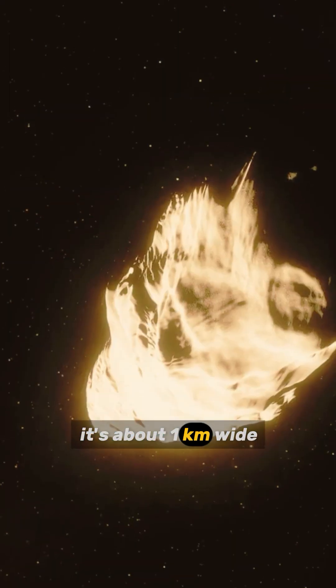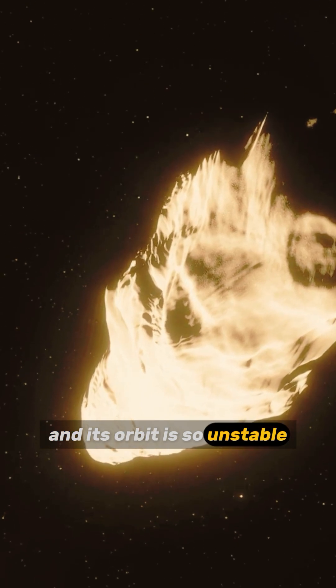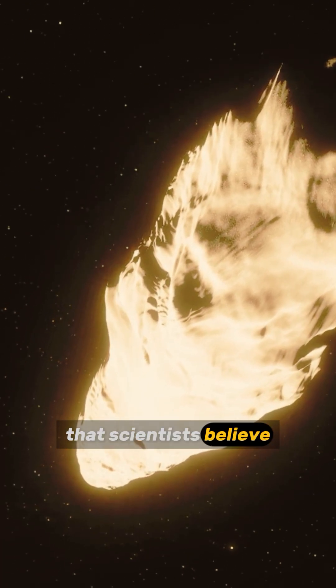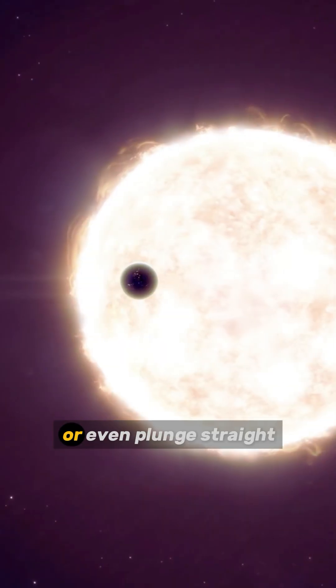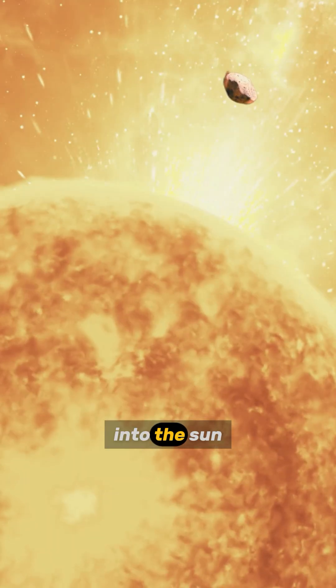It's about one kilometer wide, and its orbit is so unstable that scientists believe it'll eventually crash into Venus, Mercury, or even plunge straight into the sun.